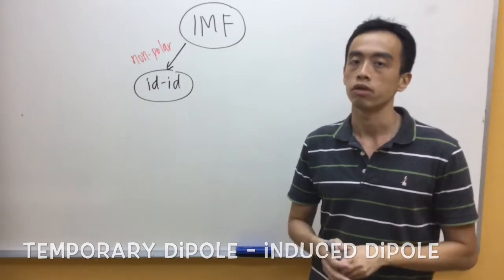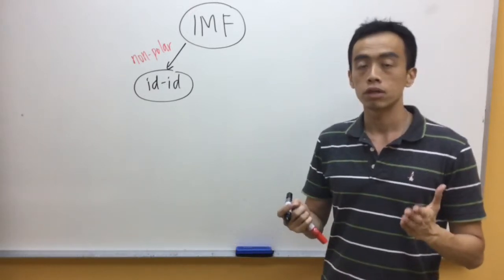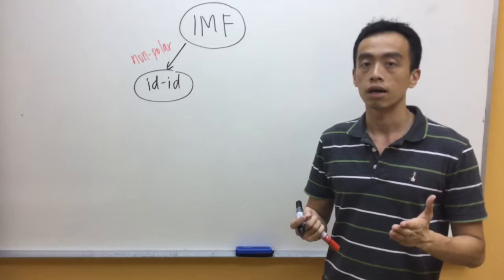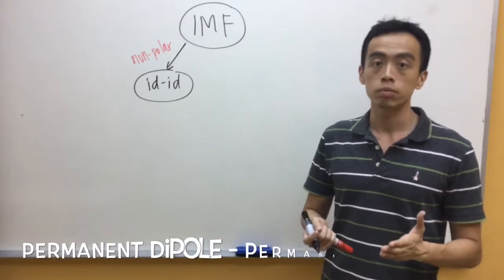In general, there's the same type of interaction. The second type of intermolecular interaction between molecules are for polar species or permanent dipole-permanent dipole interaction.